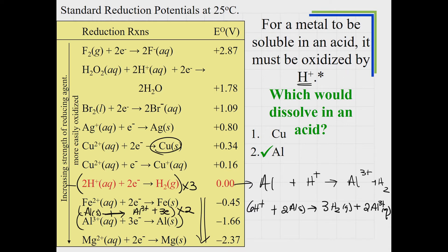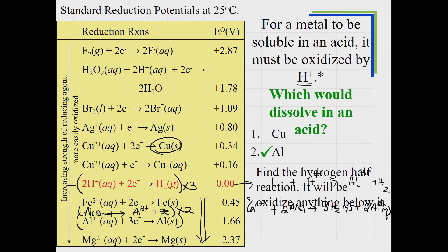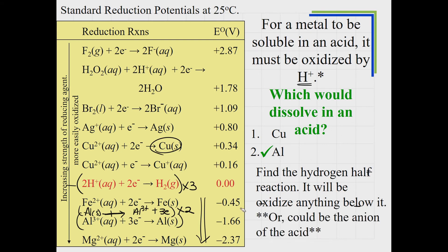It doesn't have to just be a metal below H+ on the table. The qualifier is that other oxidizing acids can dissolve more metals. For example, NO3⁻ appears higher up on the table, so if you use nitric acid, a whole lot more metals would be soluble—it's one we use frequently to dissolve metals when hydrochloric acid wouldn't work.